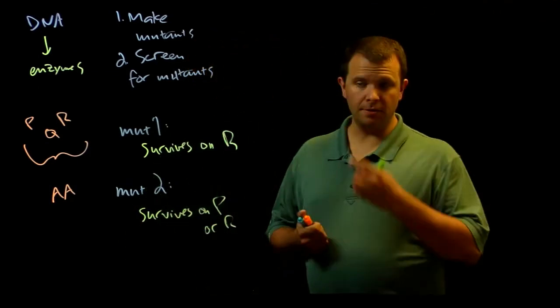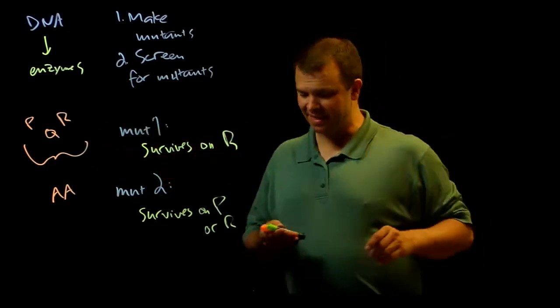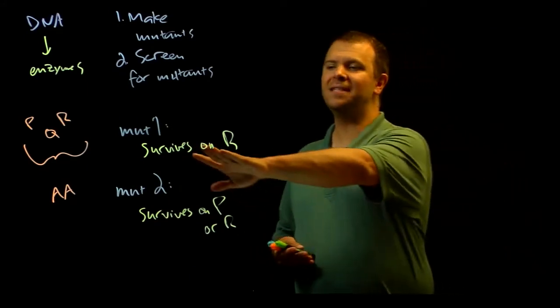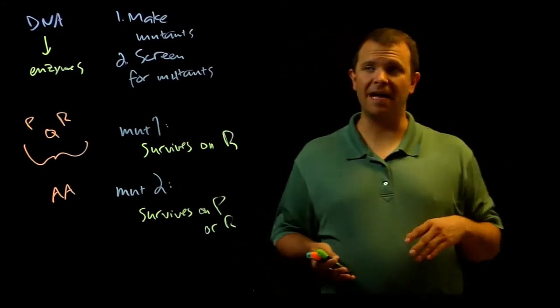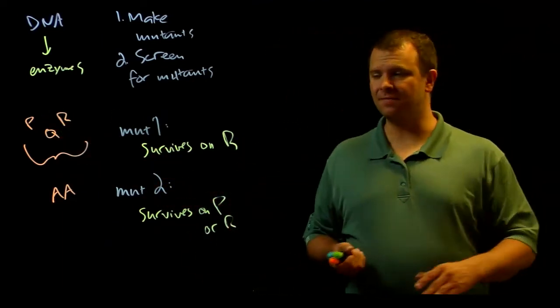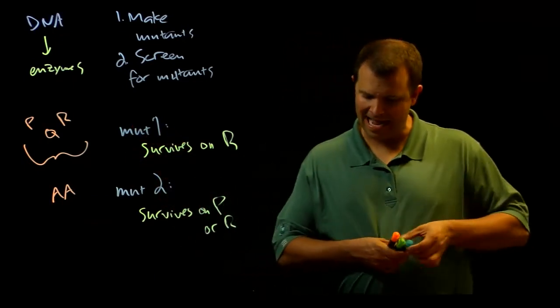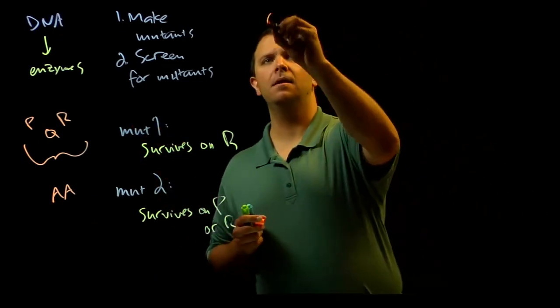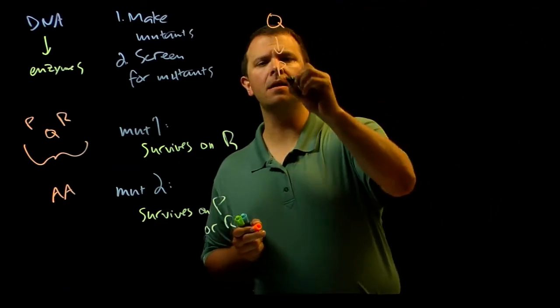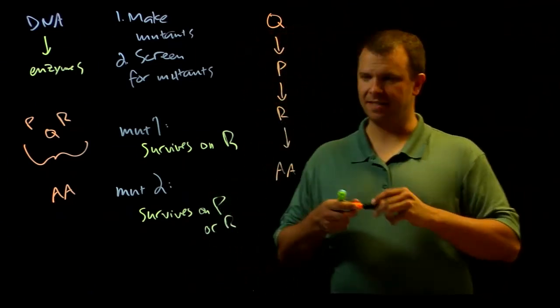Given this information, there is only one order of the intermediates in this pathway that will give me a mutant that only survives on R but not on P or Q, and a mutant that survives on P or R but not on Q. That pathway has to be Q to P to R to the amino acid.